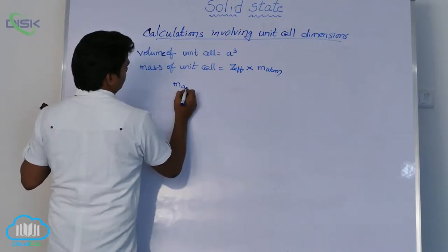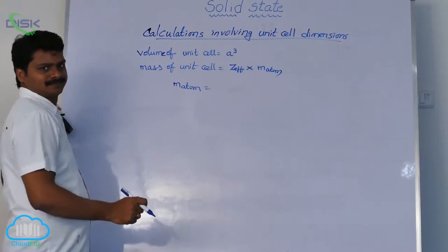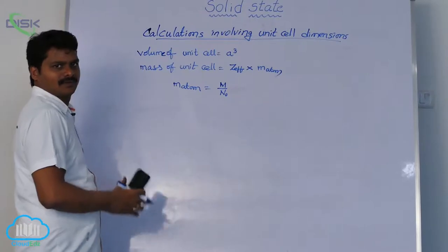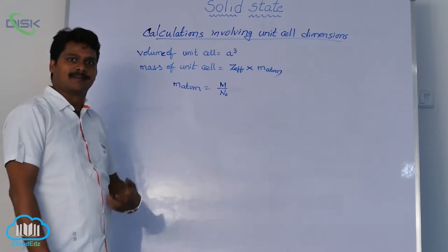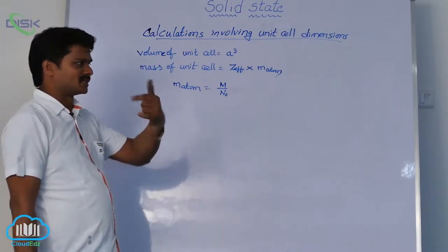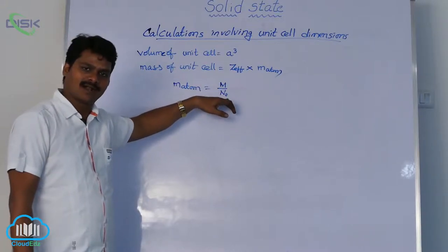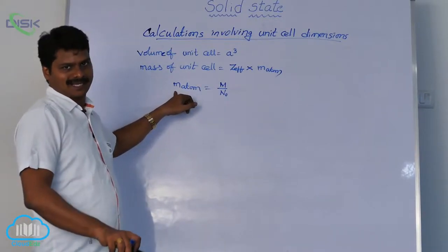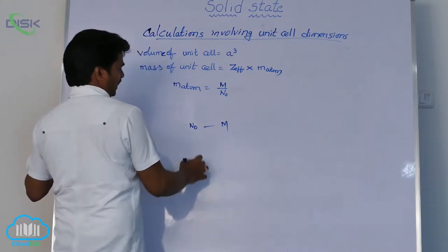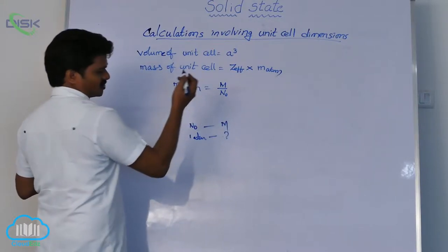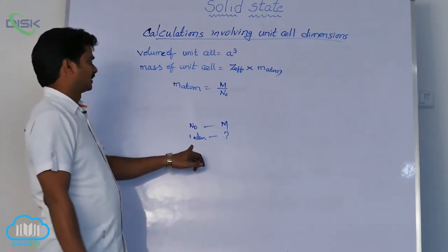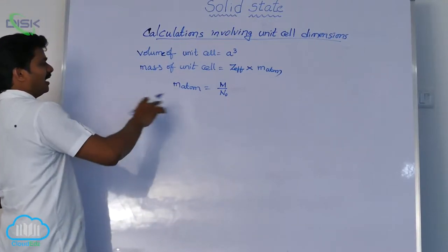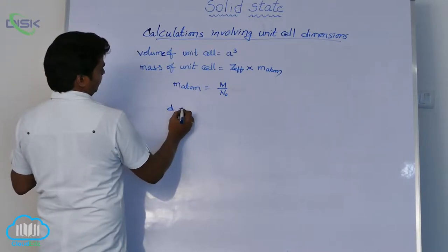How to find the mass of one atom? Mass of an atom equals molar mass divided by Avogadro's number. Avogadro's number of atoms or particles means one mole, and the mass of one mole of a substance is the molar mass. That means Avogadro's number of particles has mass M (molar mass), so one atom will have mass M divided by N₀.